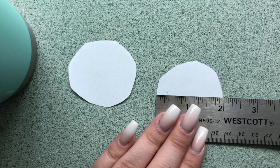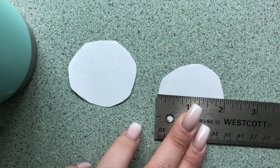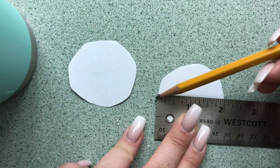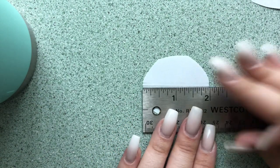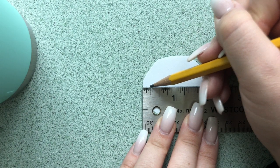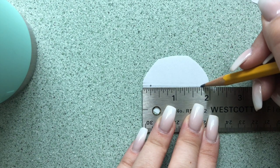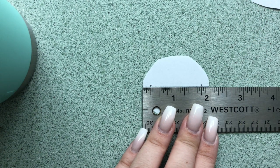You're going to find the center of your circle with your ruler and lightly draw a line right across the center of your circle. Line up your ruler along that center line, and then measure just a quarter inch from each edge of the circle, and mark the two points very lightly with your pencil.